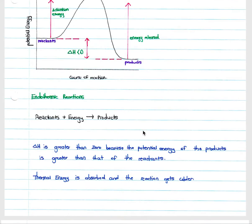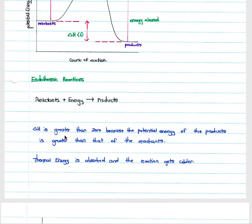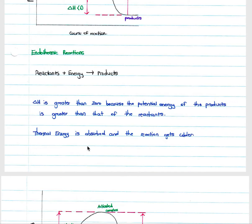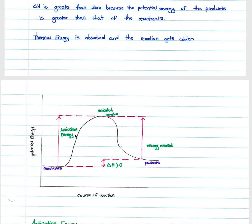In endothermic reactions, energy must be inputted: reactants plus energy form products. Delta H is greater than zero because the potential energy of the products is greater than that of the reactants. Thermal energy is absorbed and the reaction gets colder.